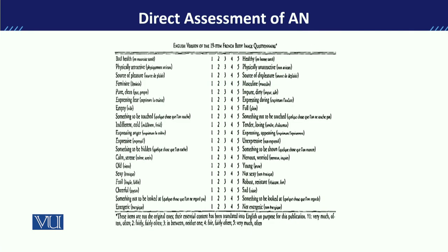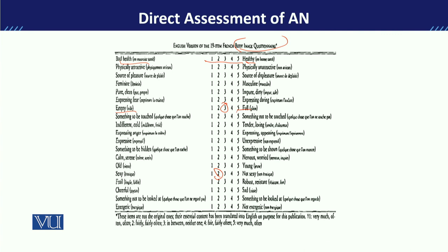Now for the Body Image Questionnaire, the rating scale is from one to five. One represents bad health and five represents healthy — so the continuum runs between them. Two, three, and four represent the medium range on this continuum. For example, if the client feels empty or full, or somewhere in between, they mark accordingly. Similarly, if they feel sexy or not sexy, or somewhere in the middle range, they click that point. Likewise for energetic versus non-energetic — wherever they feel they fall, they mark in between.